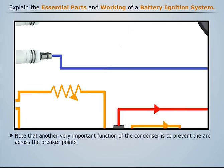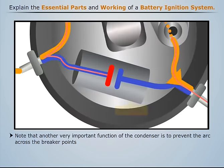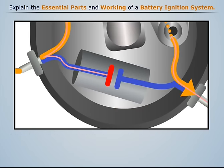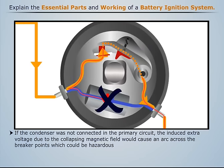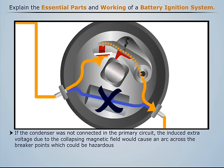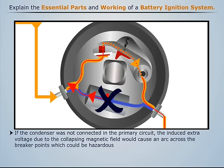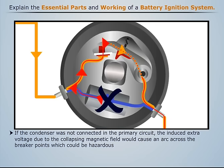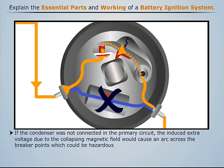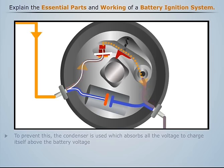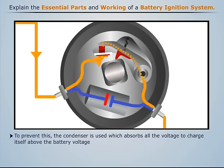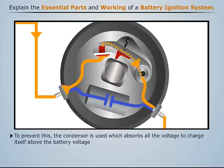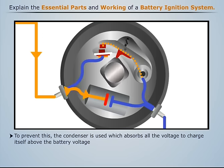Another very important function of the condenser is to prevent the arc across the breaker points. If the condenser was not connected in the primary circuit, the induced extra voltage due to the collapsing magnetic field would cause an arc across the breaker points, which could be hazardous. To prevent this, the condenser is used, which absorbs all the voltage to charge itself above the battery voltage.